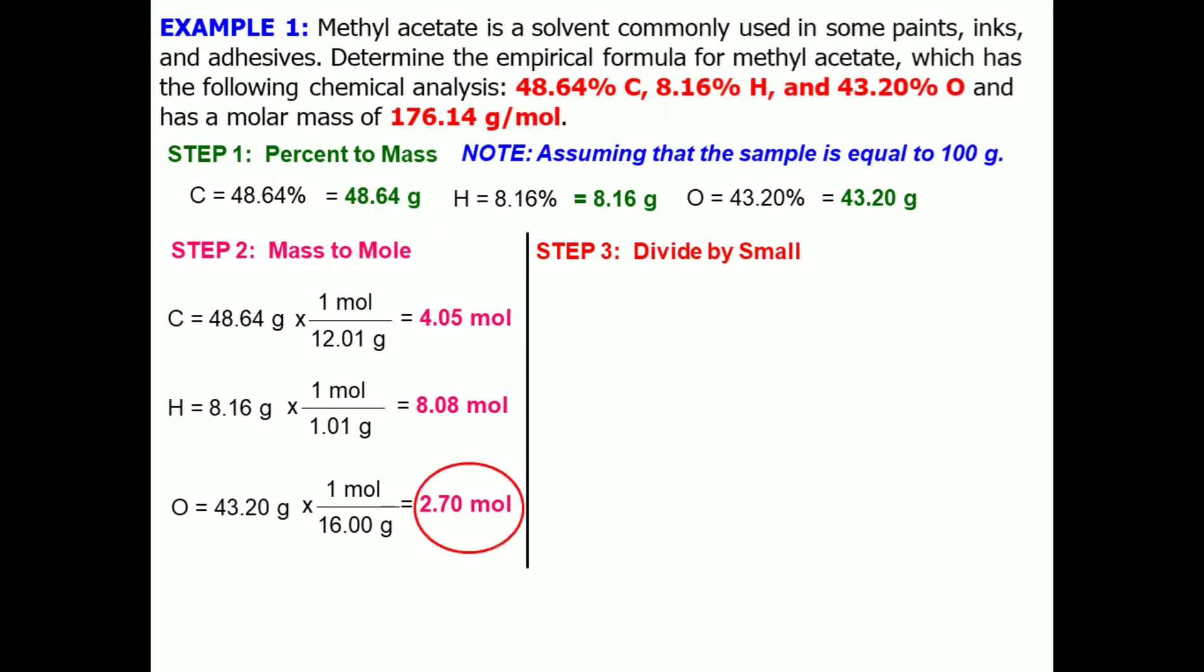Once more, when we say small, it refers to the smallest value computed in the moles. And so, it is 2.70. So, all of the moles will be divided onto this value. And this will be our result.